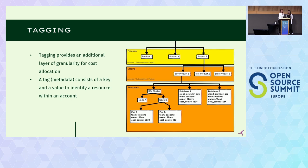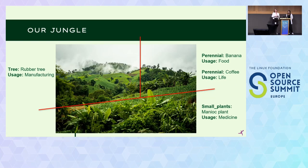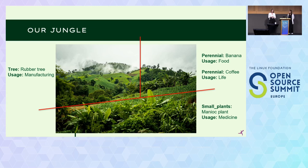Mapping that back to our jungle: we've now added some tags. We have the tag 'tree' with value 'rubber tree,' the tag 'perennial' with value 'banana,' and we have a 'usage' tag — so we can see some trees are for manufacturing, some trees for food, and some plants for medicine. We now know a lot about our jungle! But there are still some resources that are hard to allocate or that we cannot tag. In our example that would be something like the sun or water — we know all of our plants use water, but we don't know how much, and we need to allocate this to get a full picture. It's the same in the cloud.